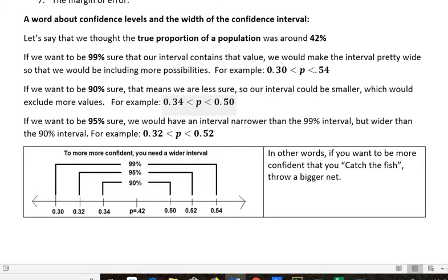Let's say that we know something about a population and the true proportion of that population was around 42%. If we want to be 99% sure that our interval contains that value, we would make the interval pretty wide so that we could be including more possibilities. So if our true proportion, we think it's around 42%, we might go all the way down to 0.30 and up to 0.54.